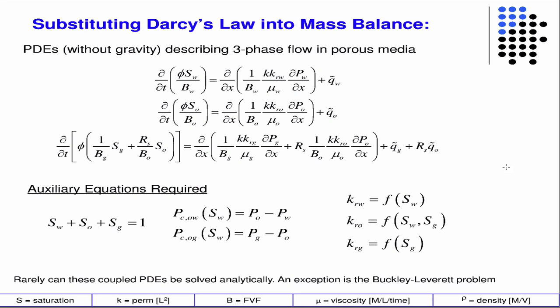So now we have some auxiliary equations. We have our constitutive models which relate the relative permeabilities to saturation. So when we plug those back into our three equations, the relative permeability terms go away, so then it's just another function of saturation. We have the capillary pressure effect equations which relate the pressures, and then we also have the saturation — this sort of volume fraction ratio — the fact that the volume fractions must add up to one.